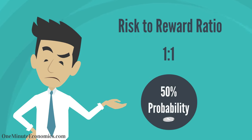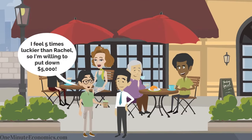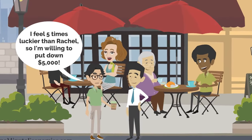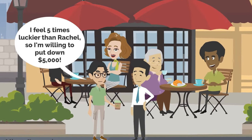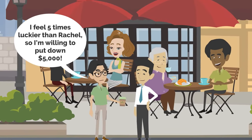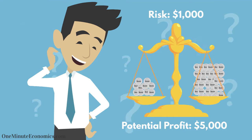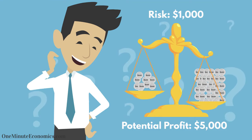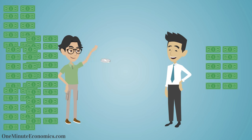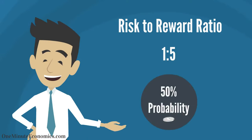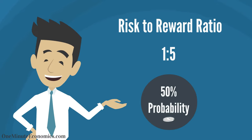A month later, Bill's other friend Tom feels lucky and says he would be willing to risk $5,000 on the coin toss, with Bill only risking $1,000. In this case, even if he knows there are never guarantees, Bill accepts, because he likes the idea of risking $1,000 for a potential profit of $5,000 on a 50% probability event. Pretty logical, right?